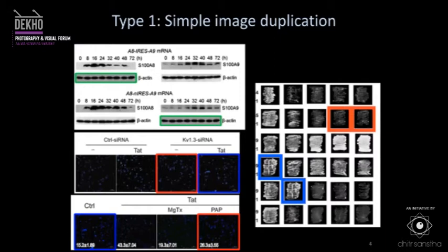Is this fraud or an honest error? These are direct, simple duplications — the same photo used twice to represent something different. That might just be an error: some scientists may have done a sloppy job, not labeled their photos carefully, and accidentally inserted the same photo twice thinking it was a different experiment. So these type 1, or direct duplications using the exact same photo twice, could be an honest error.